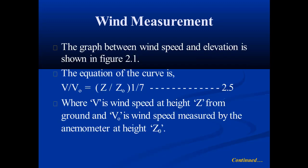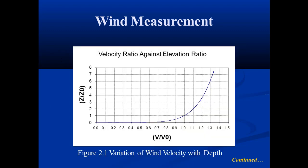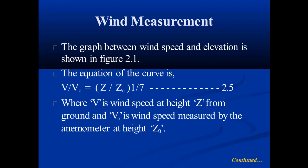The graph between wind speed and elevation is shown in figure 2.2. On the horizontal axis the wind velocity is shown, and on the vertical axis the height at which the wind blows is shown. z/z₀ represents the height ratio while v/v₀ represents the velocity ratio. z is the height at which the wind blows with velocity v, and z₀ is the reference height at which velocity v₀ is measured. The equation for the curve is v/v₀ = (z/z₀)^(1/7), where v is the wind speed at height z from the ground and v₀ is the wind speed measured by the anemometer at height z₀.